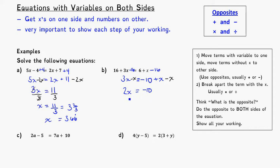If I want to solve for x now, I need to think about breaking apart that 2. That's 2 times x, so the opposite would be to divide by 2. Divide by 2 on both sides: 2 divided by 2 leaves me with x, and negative 10 divided by 2 leaves me with negative 5. Remember, a negative divided by a positive gives you a negative, so 10 divided by 2 is 5, and there's still the negative.